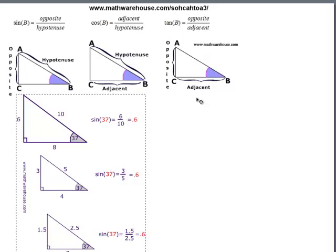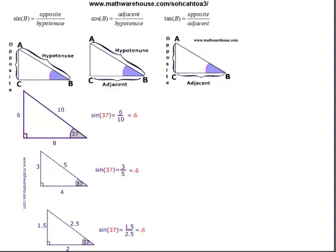Now, what's neat about these trig ratios is that they are always true for a certain angle. And let me just step back and say, remember that all of this stuff only applies to right triangles.